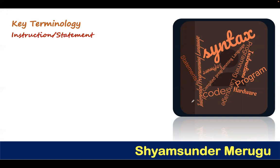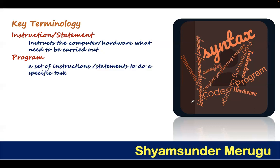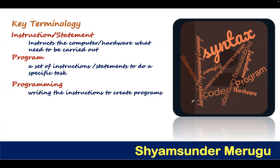The first one is instruction. An instruction is also called a statement. Basically, what instructs the computer or the hardware what needs to be carried out is called an instruction. A set of instructions to do a specific task is called a program. And writing those set of instructions to create a program is called programming.